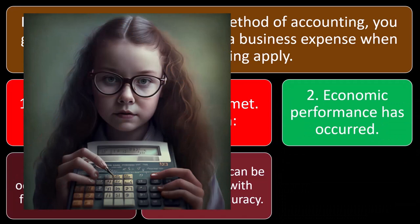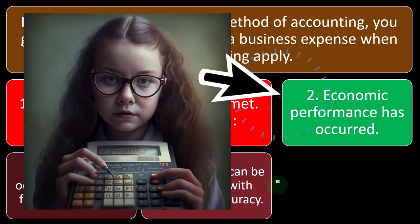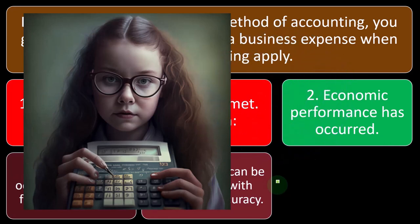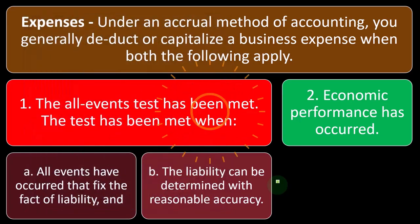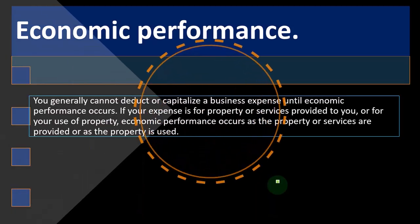You can determine how much is going to be paid. Number two: economic performance has occurred, meaning the work has actually been done — you have now incurred the liability because the work has been done. That's usually going to increase accounts payable, a liability, and then you record the expense from a journal entry standpoint.